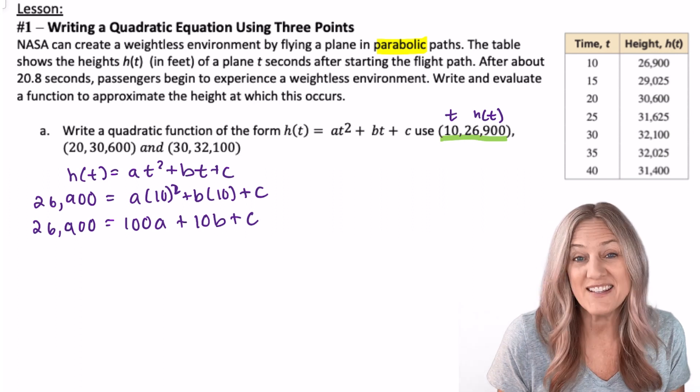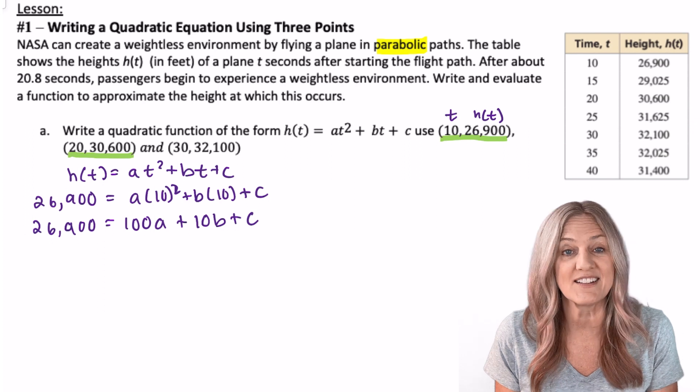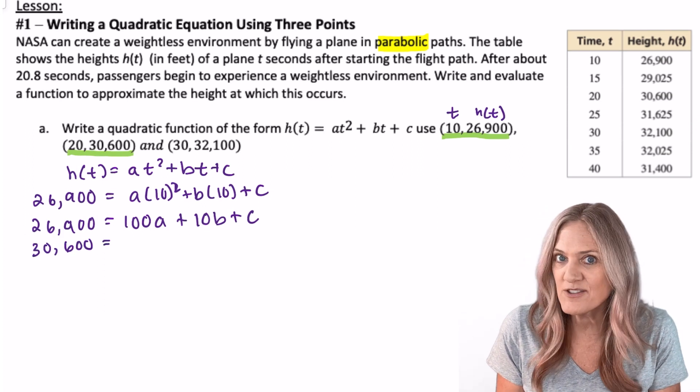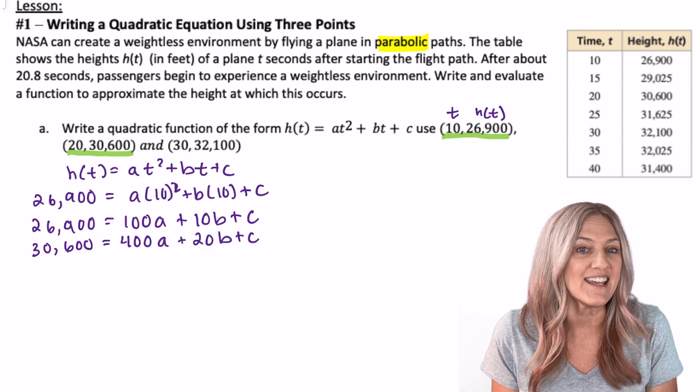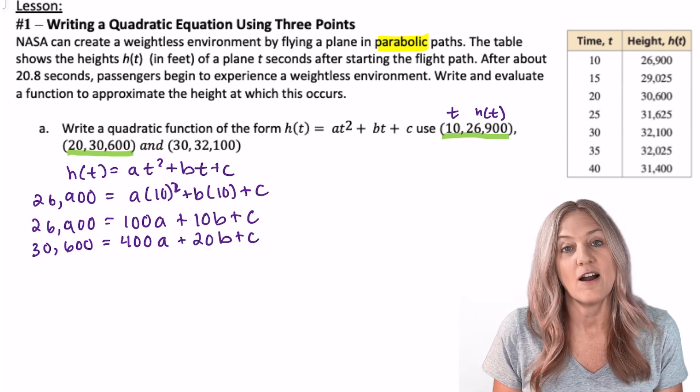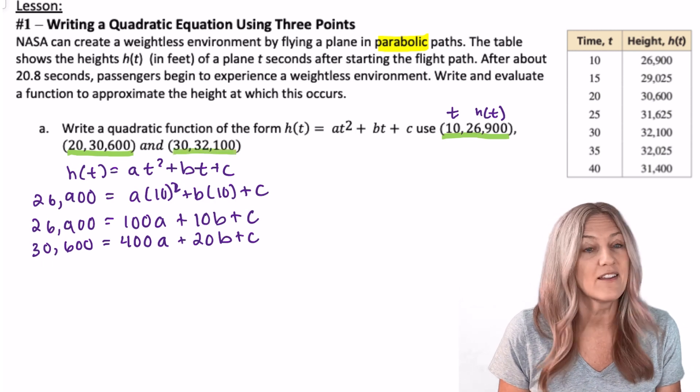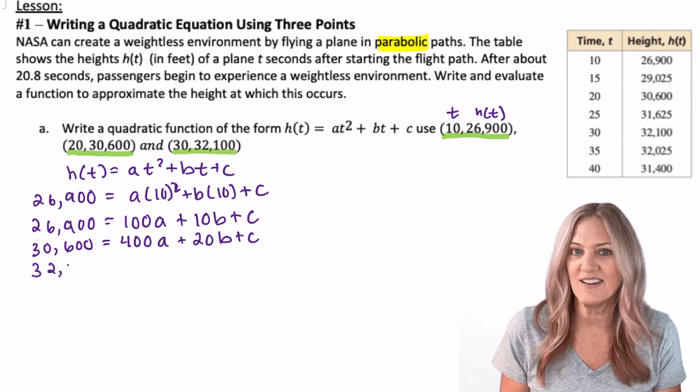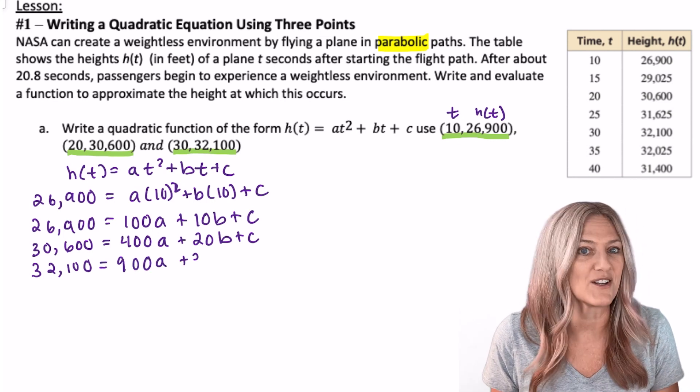All right, let's look at our second data point. We have (20, 30600). Let's substitute 30,600 for our h(20) and 20 for t. Simplify that equation. Our third equation we're going to use the point (30, 32100). Go ahead and substitute those values creating our third equation of three variables.